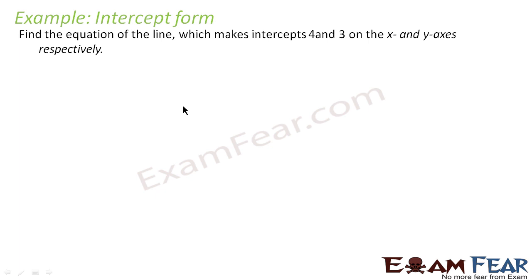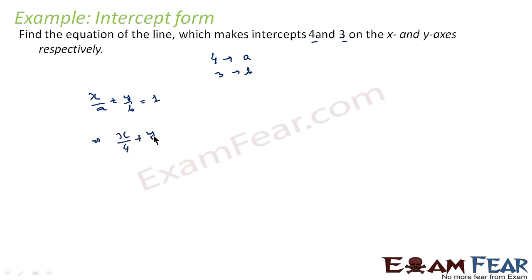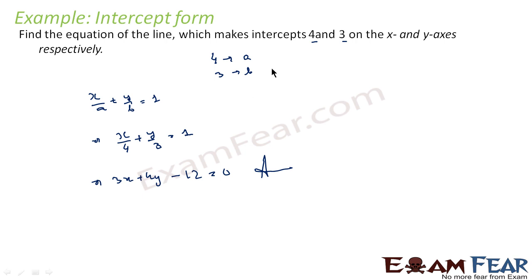Let's take one example of intercept form. We have to find the equation where 4 and 3 are the x and y intercepts respectively. So a = 4 and b = 3. Using the formula x/a + y/b = 1, we get x/4 + y/3 = 1, or equivalently 3x + 4y - 12 = 0. That is the equation. Very simple — if you know the x and y intercepts, just use the formula.